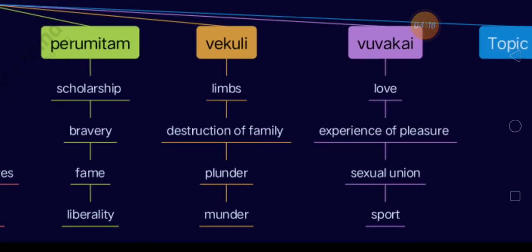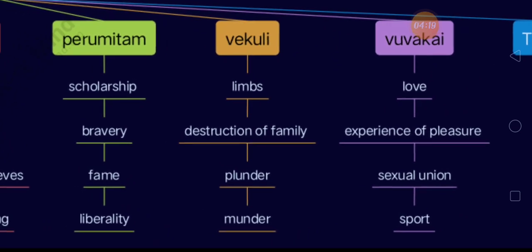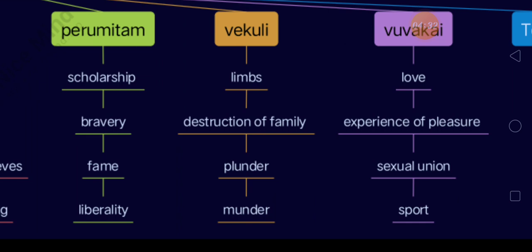The source of high-class Uwagai is also fourfold: love, experience of pleasures like beauty, sexual union, and sport in garden.